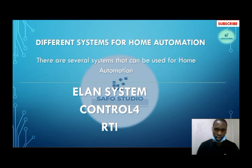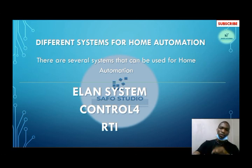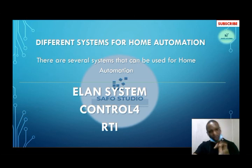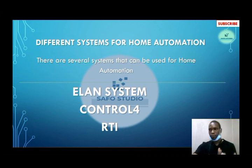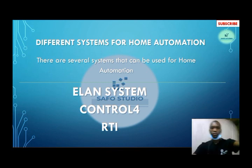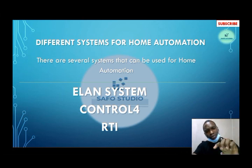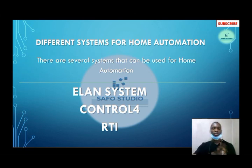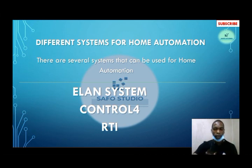Earlier I mentioned different systems for home automation — Elan, Control4, and RTI. These three systems are all used for home automation and are the major systems that represent the brain of your automation. Think of a computer setup with a keyboard, monitor, mouse, and CPU. The central processing unit for your home automation is represented by these three brands: Elan, Control4, and RTI.